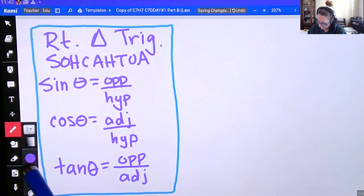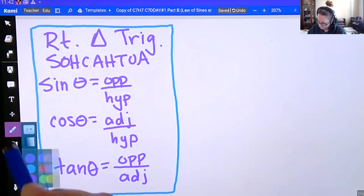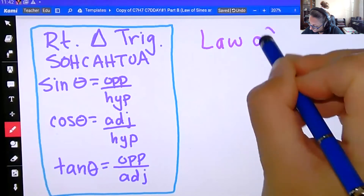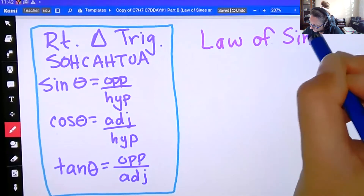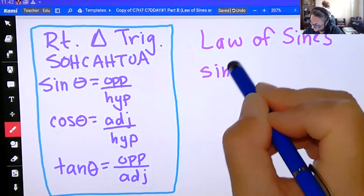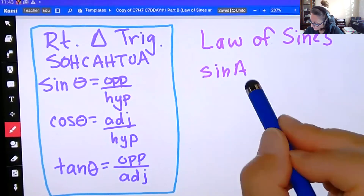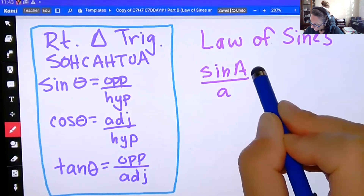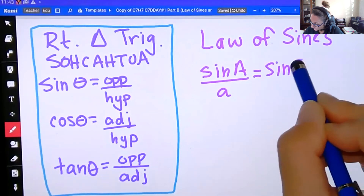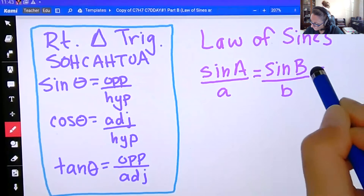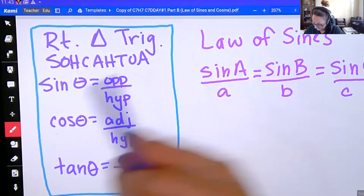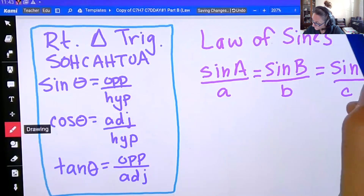We also have our law of sines. For a triangle ABC, sine of A over little a equals sine of B over little b, or equals sine of C over little c. This is our law of sines.